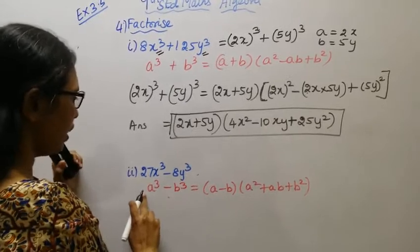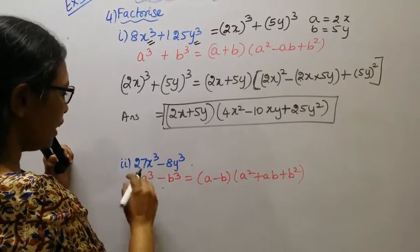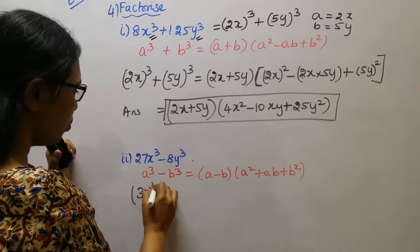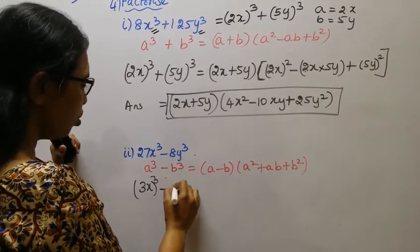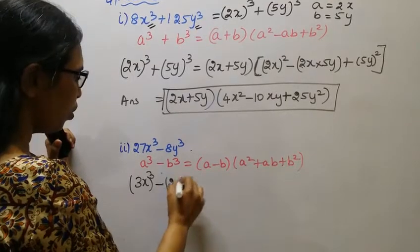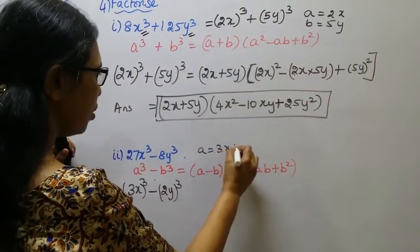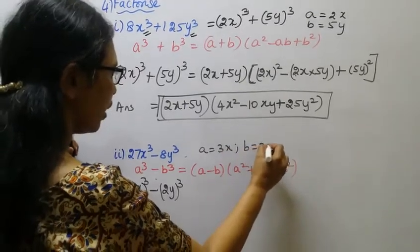Now, second subdivision: 27x³ - 8y³. (3x)³ - (2y)³. a = 3x, b = 2y. What is it?